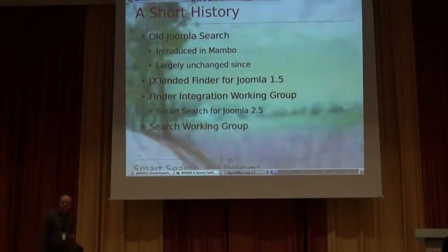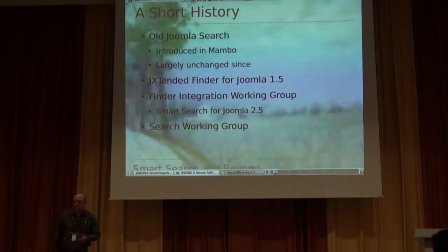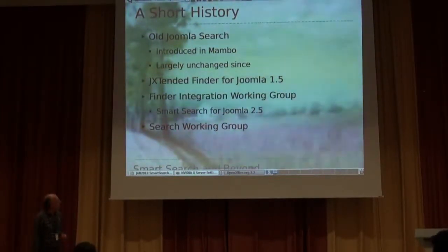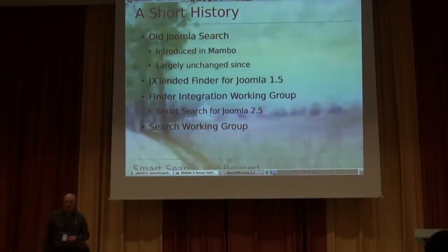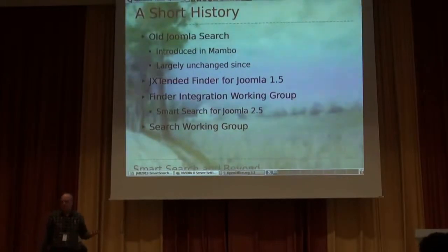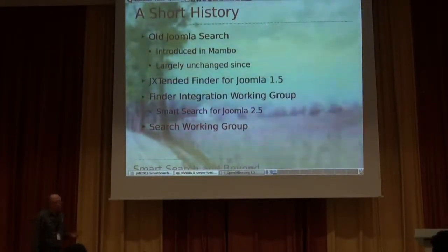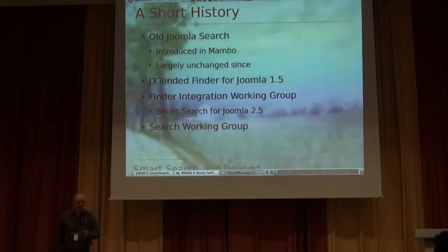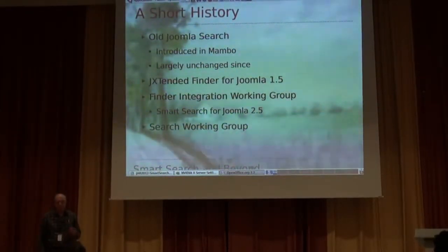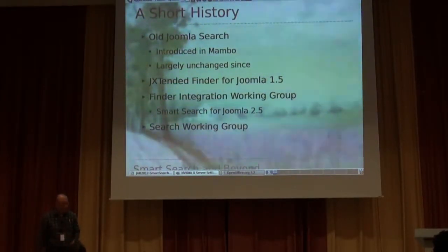We're very lucky — Michael Babker in particular did a tremendous amount of work in actually making that happen. So, Smart Search resulted in Smart Search actually being introduced into 2.5. Smart Search as it stands right now is pretty much Finder — the original Finder — with some code changes, but it's pretty much the same. And now, as you perhaps know, we're setting up a new search working group to look at what goes beyond that, to see where we can take Smart Search for future releases, but also maybe what goes beyond Smart Search completely as well.